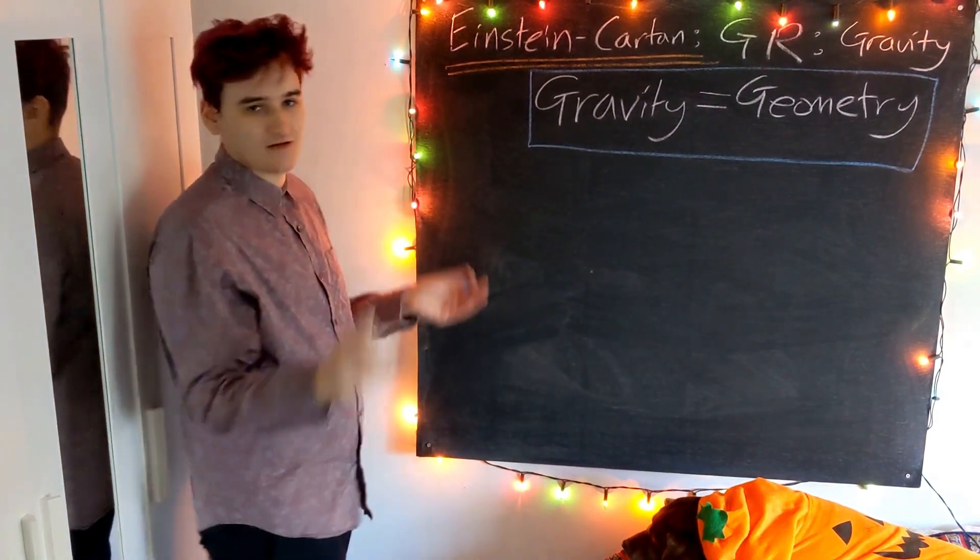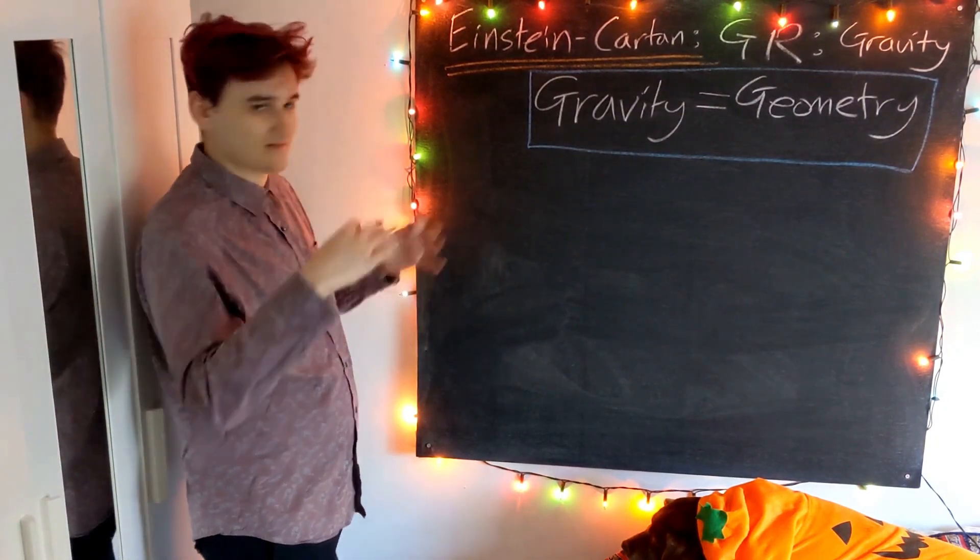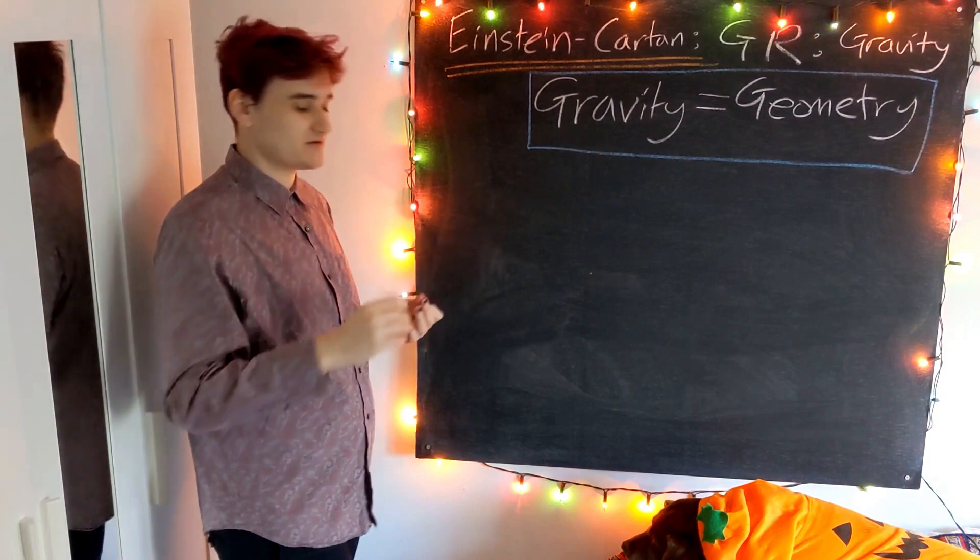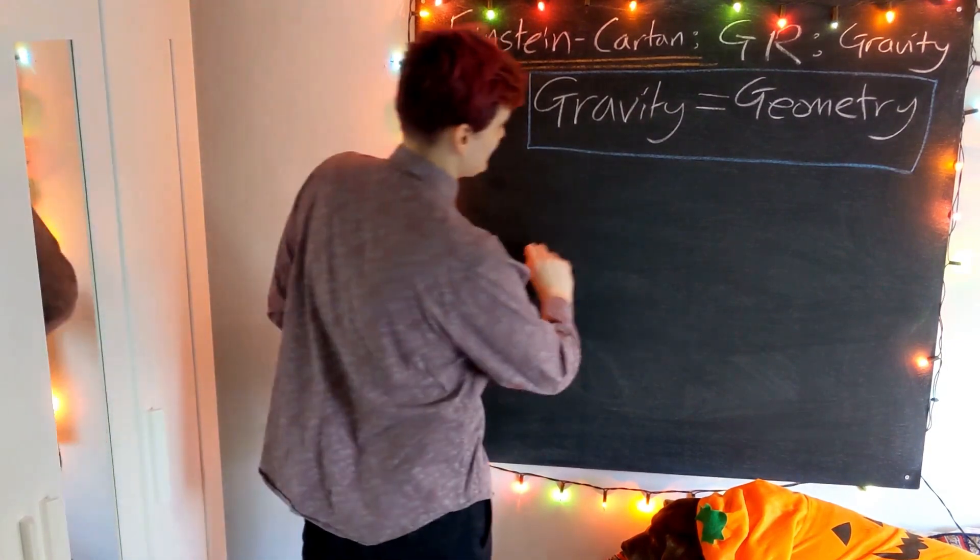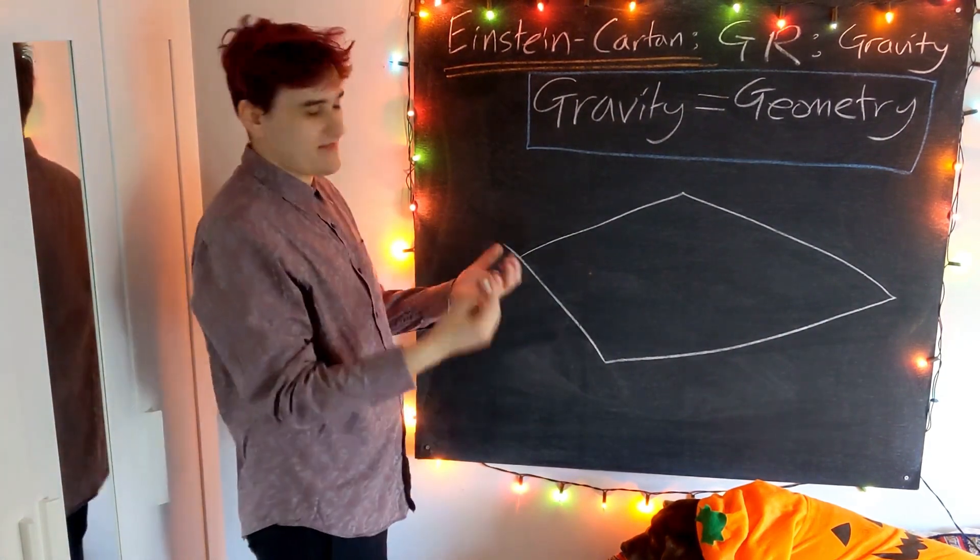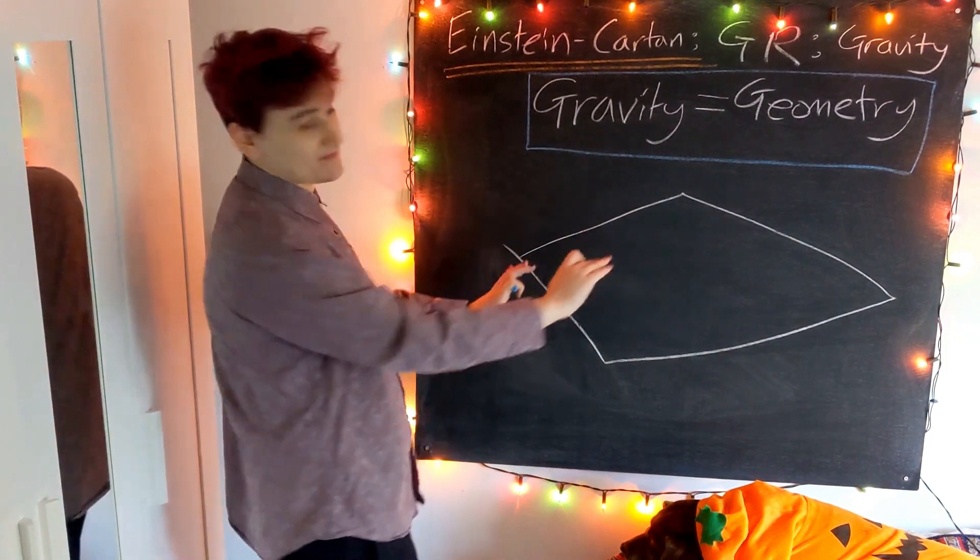The usual analogy that people use is that you imagine spacetime as being like this rubber sheet. They usually use a two-dimensional example, so we have some kind of two-dimensional plane of space. This is a flat spacetime initially.